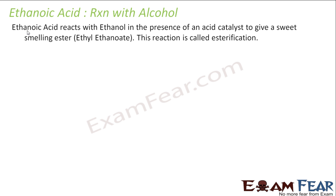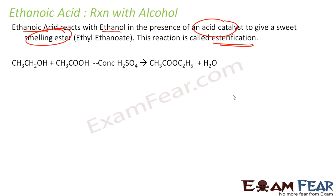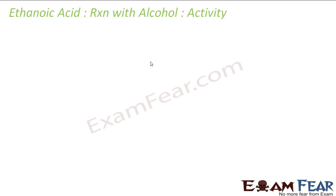Ethanoic acid also reacts with alcohol. Ethanoic acid reacts with ethanol in the presence of an acid catalyst to give a sweet-smelling substance called an ester, and this process is called esterification. So the acid and alcohol, in the presence of sulfuric acid, give ethyl ethanoate, which has a sweet smell.